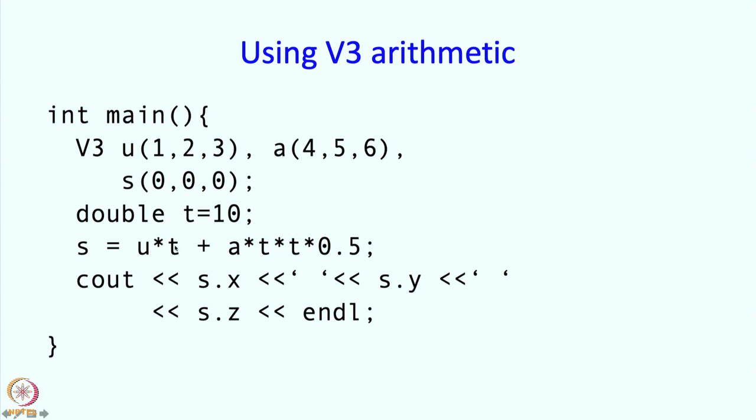Why is that? So u times t, we have defined u times t is going to be u dot operator star of t. So we have defined how this is going to happen. This is going to multiply every member, every component of u by t. So it is going to do exactly the right thing. What about this a times t? That is again scaling.